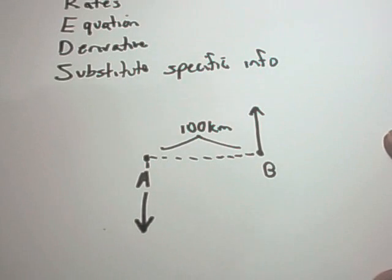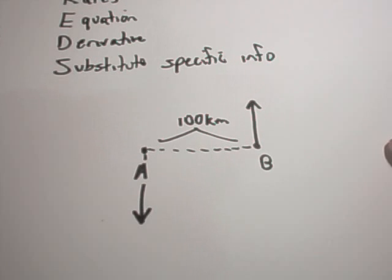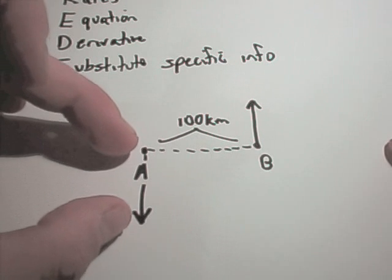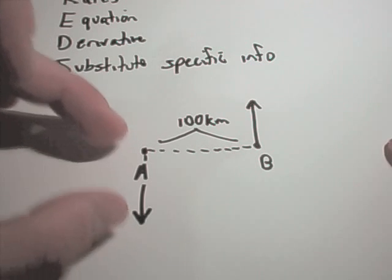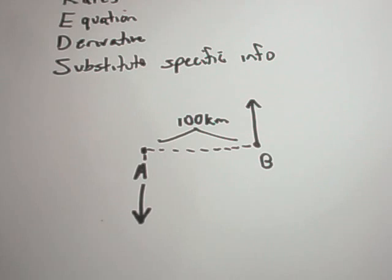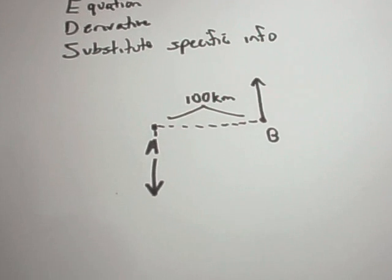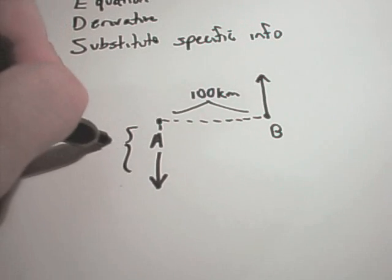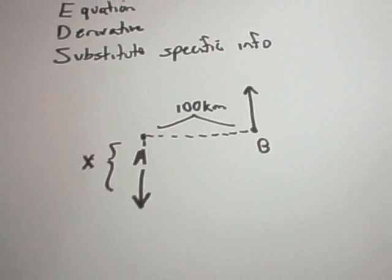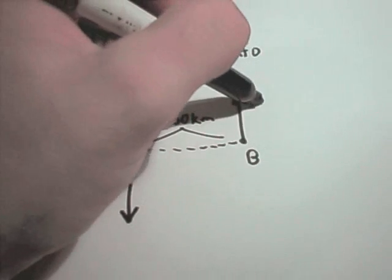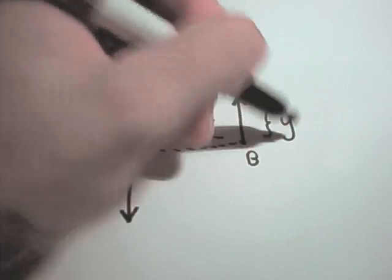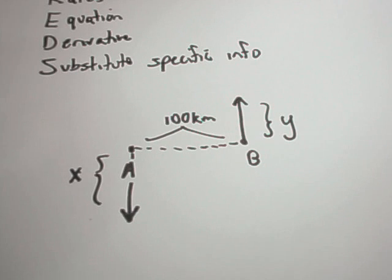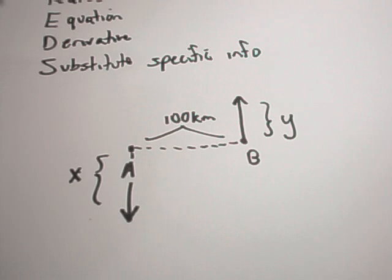So this is one important thing. Any quantities that vary with time, you're going to want to label those with variables. So certainly this distance A is getting bigger as this ship travels further south. So I'm going to label that, I'll say that his distance traveled is X. And the same thing with ship B, we'll say that its distance traveled is Y.